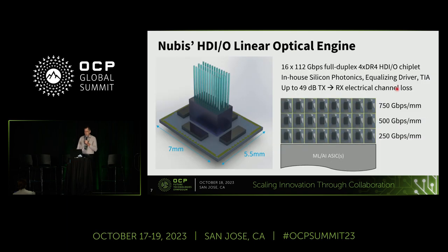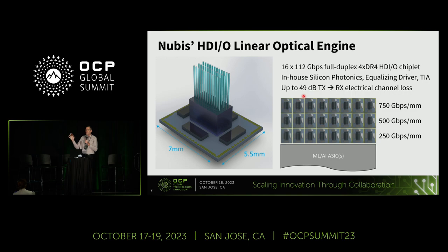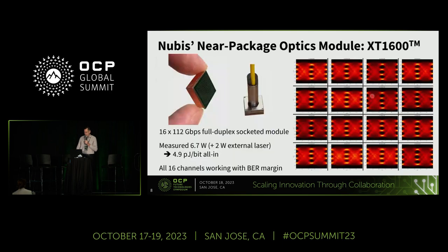Our engine is a silicon photonics die incorporating 16 transmitters and 16 receivers, with octal drivers and TIAs flip-chipped on top, and a two-dimensional 3-by-12 fiber array — 16 transmit fibers, 16 receive fibers, and four fibers feeding external laser light — totaling 1.6 terabits per second. With very smart drivers featuring strong equalization, we have shown we can bridge up to 49 dB of aggregate electrical trace loss from transmitter to engine and back to receiver, using a regular MR SerDes. Concatenating rows, we get 250 gigabits per second per millimeter for a single row, scaling to 500, 750, and a terabit per second per millimeter with four rows.